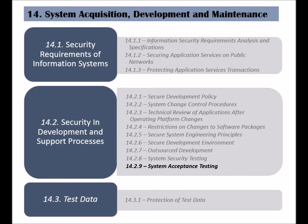The ninth and last control of the security in development and support processes is called system acceptance testing. Before a new system is finally moved into operation, or a new upgrade being rolled out, an acceptance testing should be performed, which ensures that the system is acceptable by the organization.